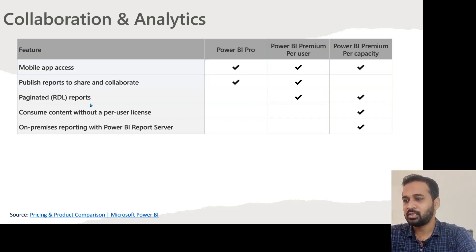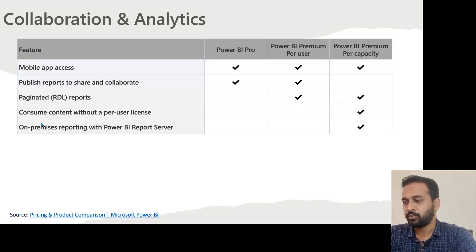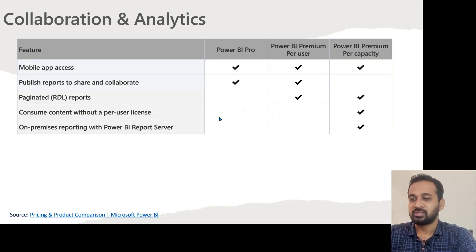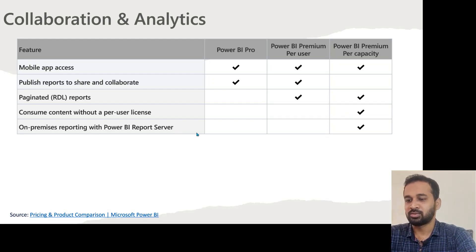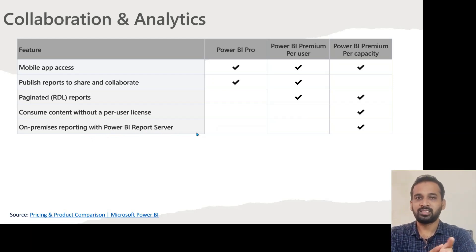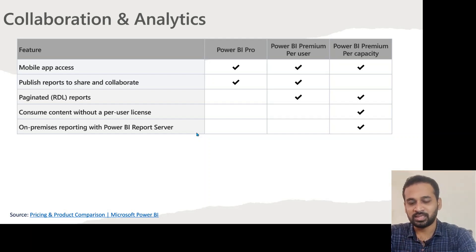Paginated reports are available only for PPU and Per Capacity, not for Pro. Consuming content without a per-user license: for Pro and PPU, you must have a separate license, but for consumption with Premium Per Capacity, that's not required. On-premises reporting with Power BI Report Server is available if you have Power BI Premium Per Capacity, but not for Pro or Premium Per User.